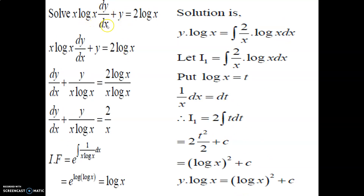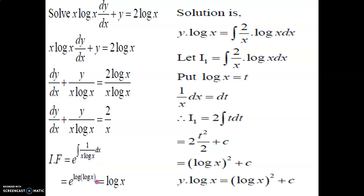Solve x·log(x)·dy/dx + y = 2·log(x). Divide both sides by x·log(x): dy/dx + y/(x·log x) = 2·log(x)/(x·log x). Log x cancels on the right, giving dy/dx + y/(x·log x) = 2/x. So p = 1/(x·log x) and q = 2/x. Integrating factor = e^(∫(1/(x·log x))dx). Using the property ∫f′(x)/f(x)dx = log|f(x)|, we get IF = e^(log(log x)) = log(x).